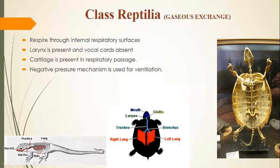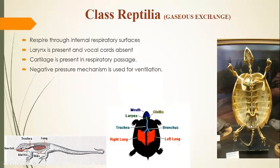In turtles, the ribs are attached to the shell. Muscles are attached to this shell. You can see the right lung, left lung, bronchus, trachea, larynx, mouth, and glottis are all present. Turtles keep on expanding and compressing their lungs and body by moving muscles attached to the ribs, which are connected to the shell. The shell is very important along with the ribs and muscles for inhalation and exhalation.